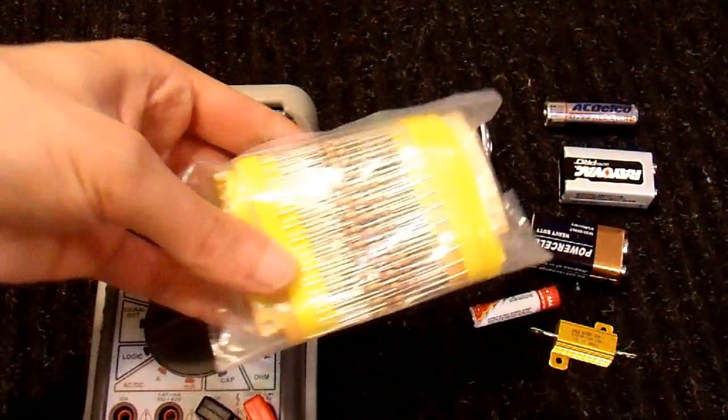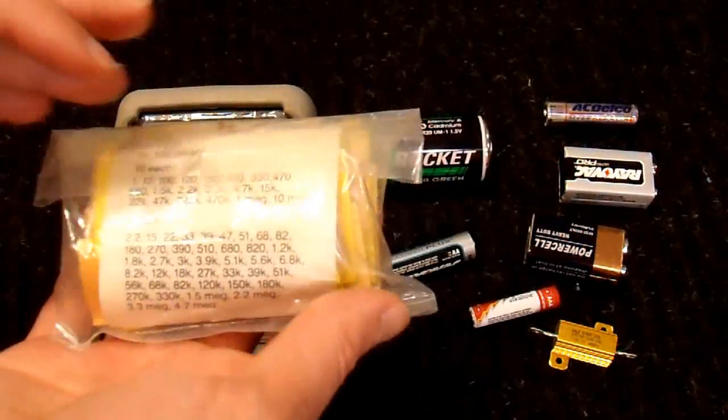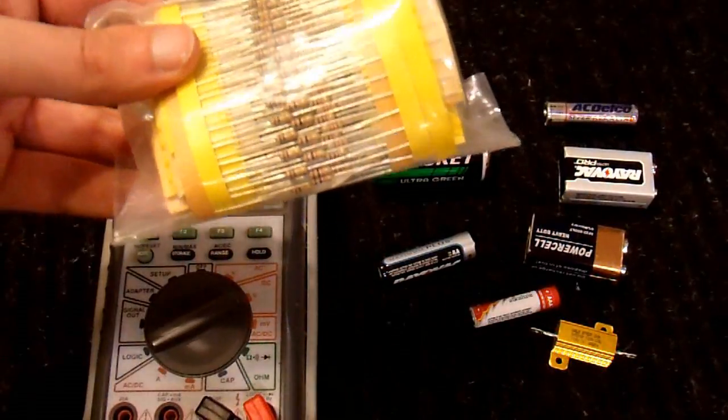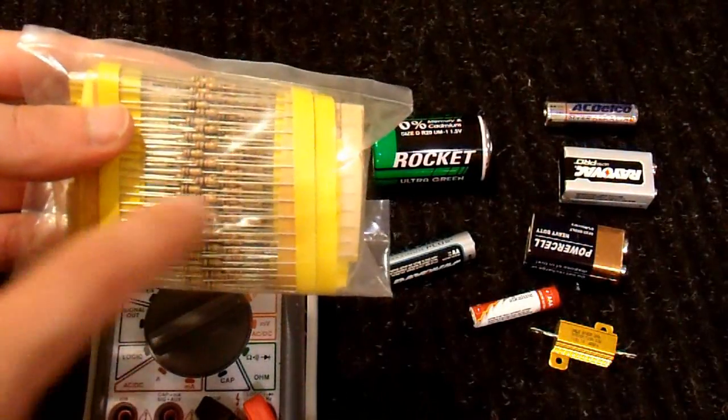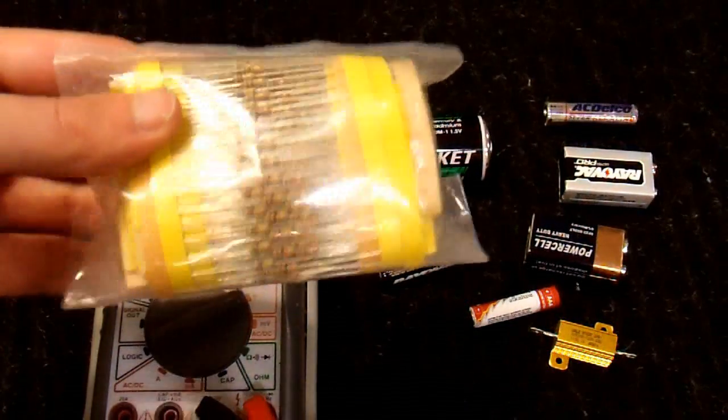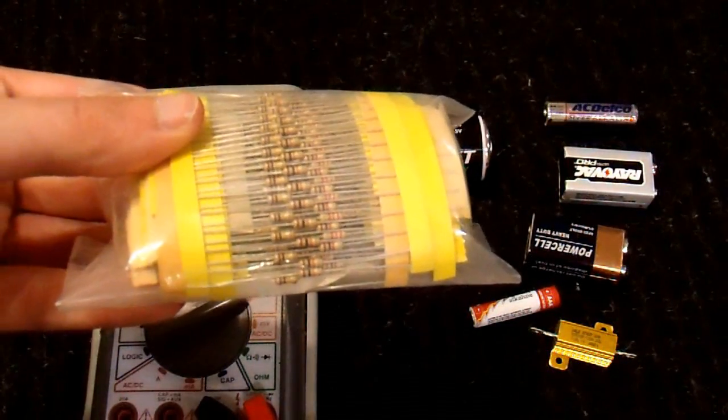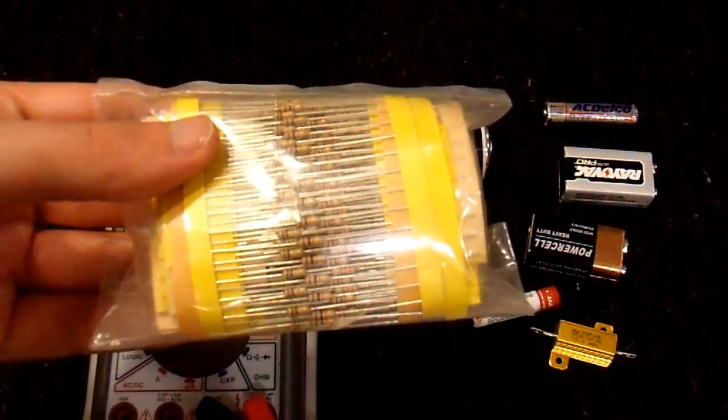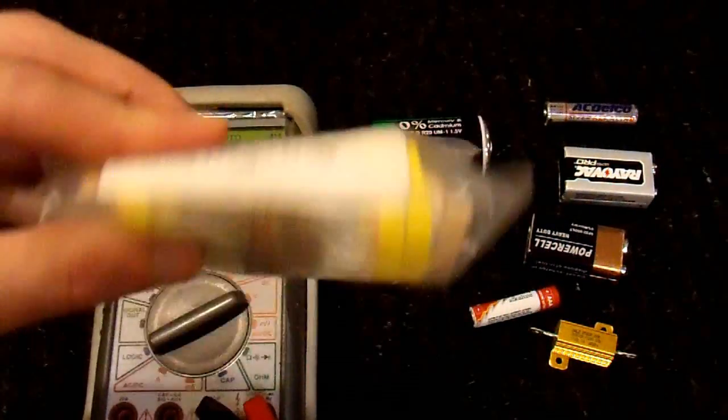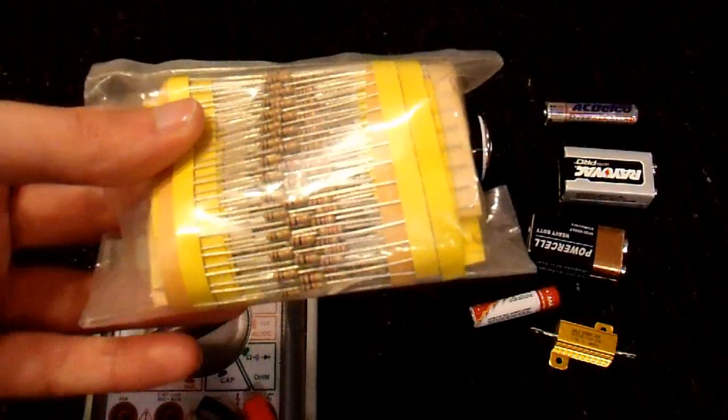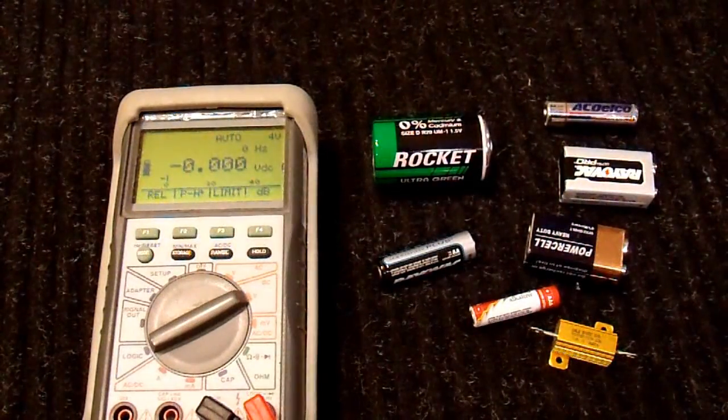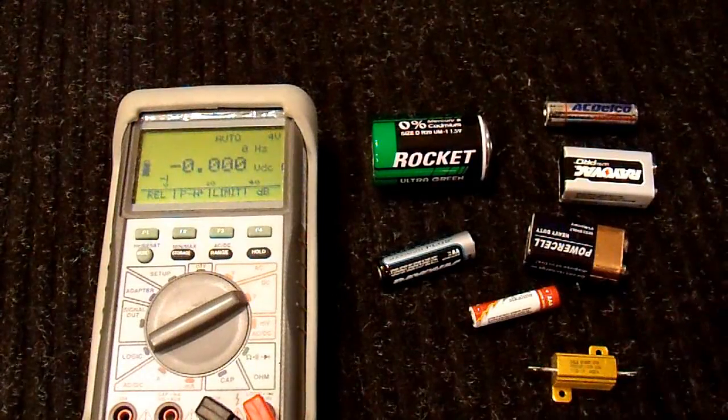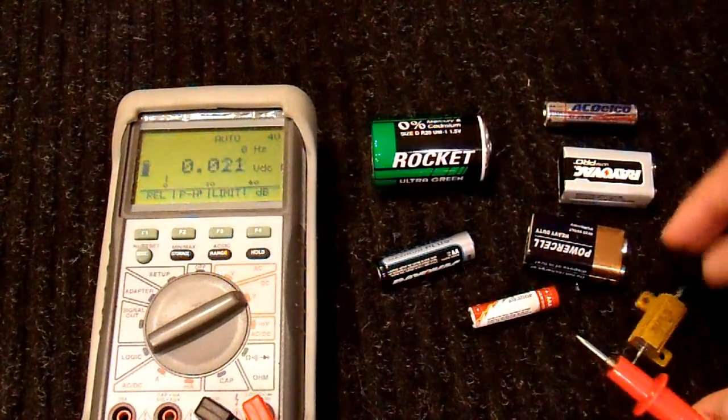You can get this type of resistor. This happens to be a big pack that I got from Radio Shack probably 10 years ago. I'm still going through it for projects and whatnot, but they're just quarter watt carbon film resistors. And you can use these as well. There's lots of different ways to get resistors, but somewhere around 100 ohms. And probably only cost you a few cents to get one if you know where to look.